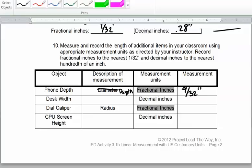My desk width, I'm going to go ahead and measure my desk width right now. I'm getting a measurement of approximately 25 and 1/4th inches. As a decimal, that would be 1 divided by 4 or 25.25 inches.